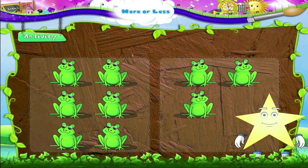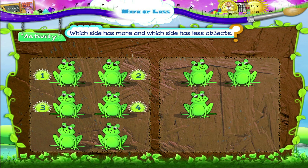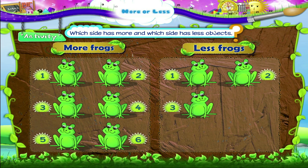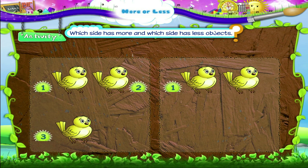Let's do an activity together. Which side has more and which side has less objects? One, two, three, four, five, six frogs. One, two, three frogs. The side that has six frogs, Starry, has more frogs. And the side with three has less frogs. And now, birds — one, two, three birds. One, two birds. More birds, less birds.